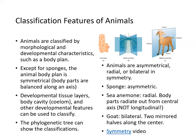Animals are classified by morphological and developmental characteristics, such as body plan. Except for sponges, the animal body plan is symmetrical — body parts are balanced along an axis. Developmental tissue layers, body cavity, coelom, and other developmental features are also used to classify them, and a phylogenetic tree can show these classifications.